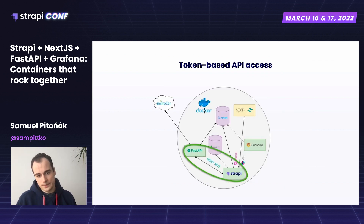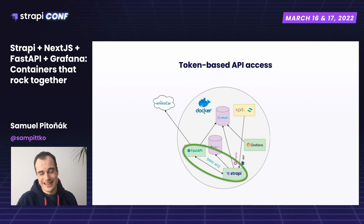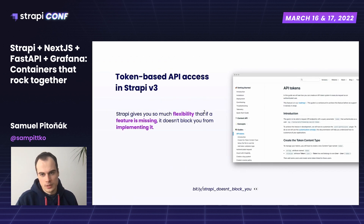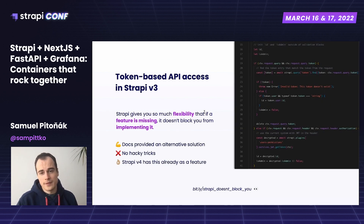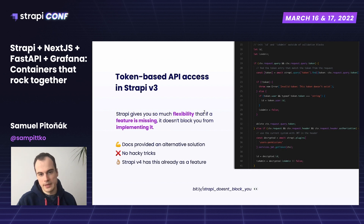Another thing I needed was to secure communication between the two components open to the outer world, so token-based API access was exactly what I needed. Strapi v3 unfortunately didn't have this feature out of the box, but the great thing about Strapi is that when a feature is missing you're free to implement it yourself due to its flexibility. The docs provided a solution so I could proceed according to steps the Strapi team provided without needing hacky workarounds. Strapi v4 now has this feature out of the box.